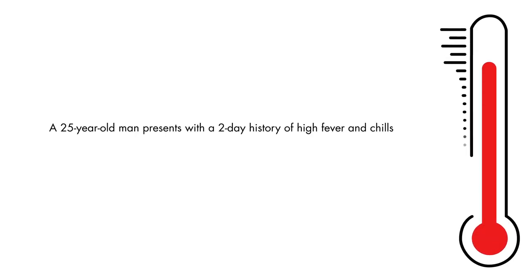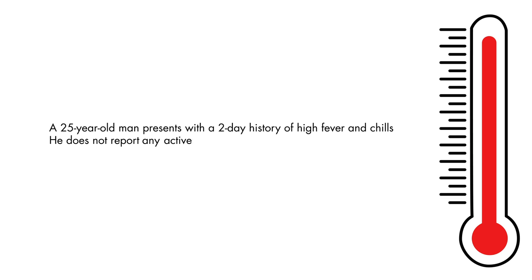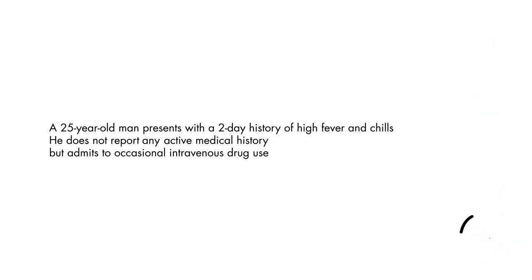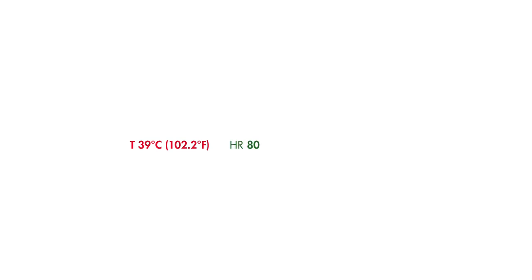A 25-year-old man presents with a two-day history of high fever and chills. He does not report any active medical history, but admits to occasional intravenous drug use. His temperature is 39 degrees Celsius, with a heart rate of 80 beats per minute. Respirations are 16 breaths per minute, and blood pressure is 124 over 76 millimeters of mercury.